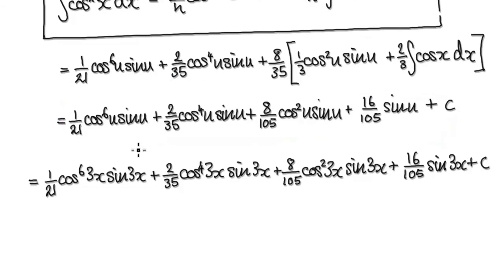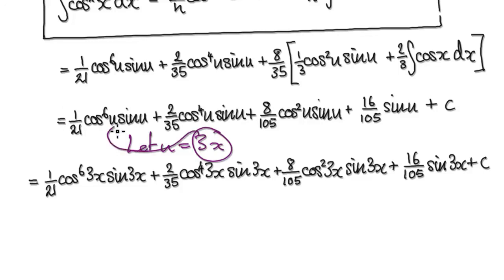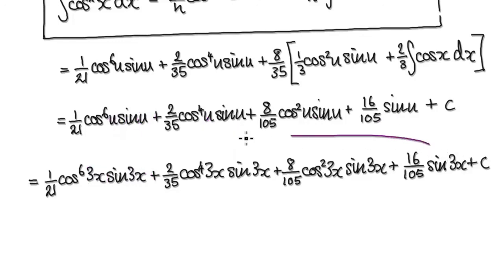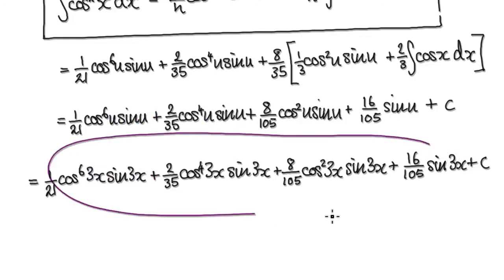And remember, right from the start, we said let u equals 3x. So we can put this back in for u here. So that would then be 3x. Put it into here — sin 3x. Put it into here, put it into here, put it into here, put it into here, put it into here. Then your final answer would be this whole thing here.